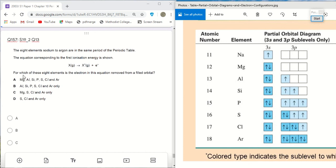Then they ask for which of the 8 elements in Period 3, this equation removed an electron from a filled orbital. Now, a filled orbital means an orbital that has two electrons, that means fully filled.